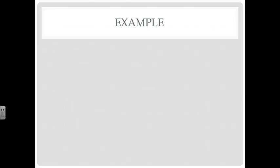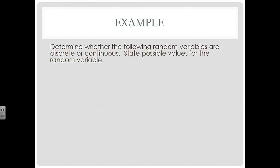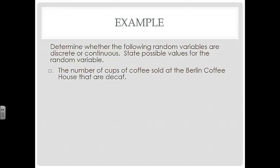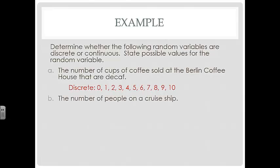Let's take a look at an example. Determine whether the following random variables are discrete or continuous. State possible values for the random variable. The number of cups of coffee sold at the Berlin Coffee House that are decaf. Well, that's countable, so that's going to be discrete. You can place those numbers on a number line, and they are the whole numbers. The number of people on a cruise ship, again, they're countable, they're finite.